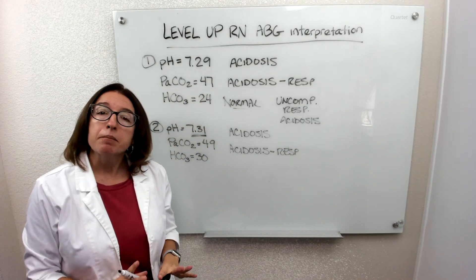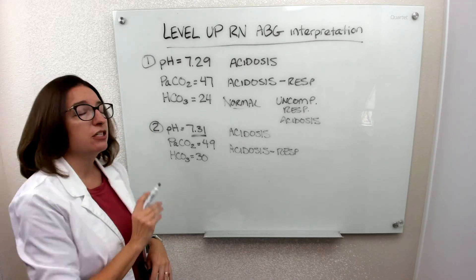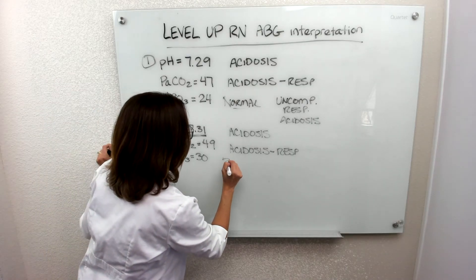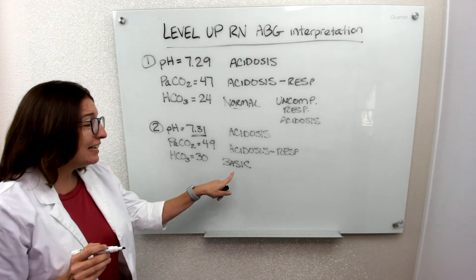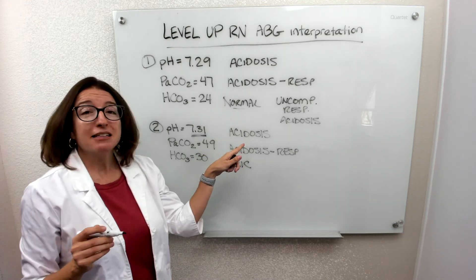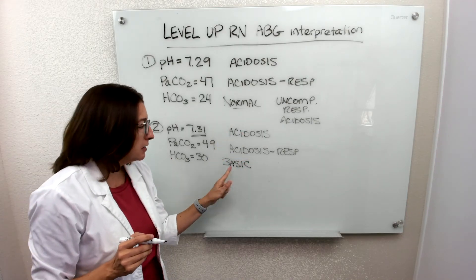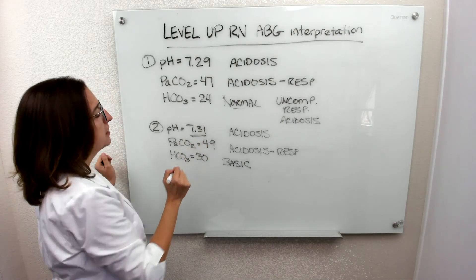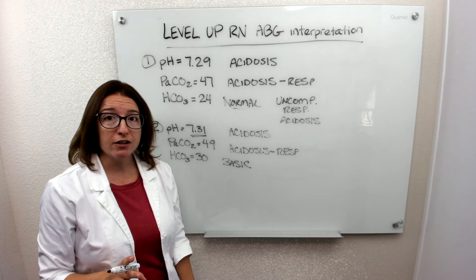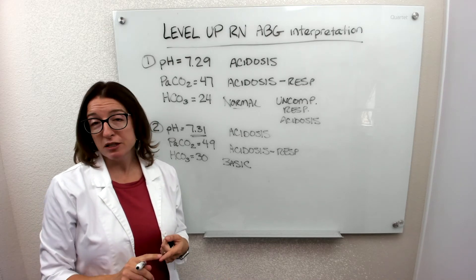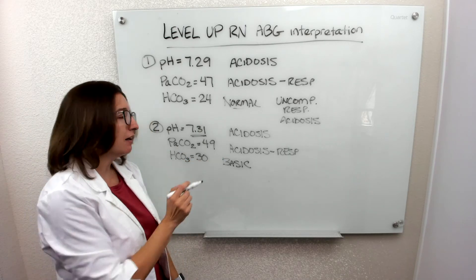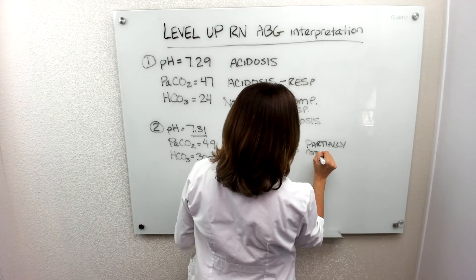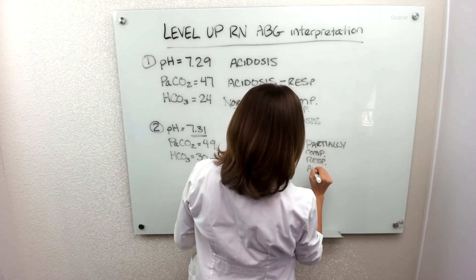Now let's see if the metabolic system is trying to fix the situation. HCO3 should be between 22 and 26; in this case it's 30, so it's on the basic side — it is trying to compensate for this acidosis. The respiratory system is causing the acidosis and the metabolic system is basic, trying to neutralize the situation. But does it fully compensate? No, because the pH is 7.31, not within normal range. So we have partially compensated respiratory acidosis — the metabolic system is trying to compensate but hasn't fully compensated.